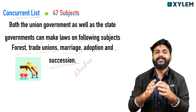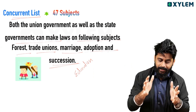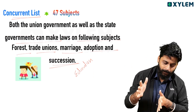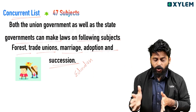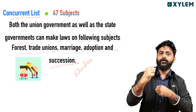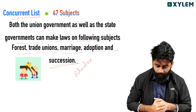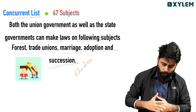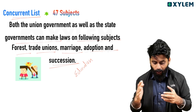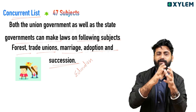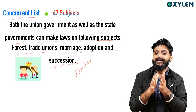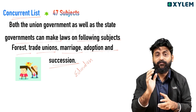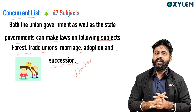The last one is the concurrent list. It contains 47 subjects. Both the union government as well as the state governments are allowed to make laws on these subjects. Examples include trade unions, marriage, adoption, and succession.